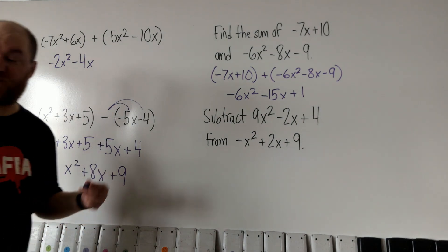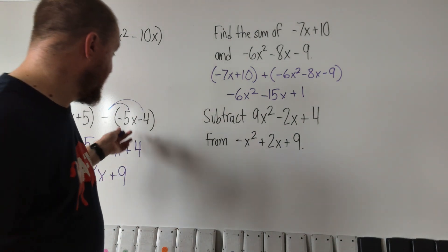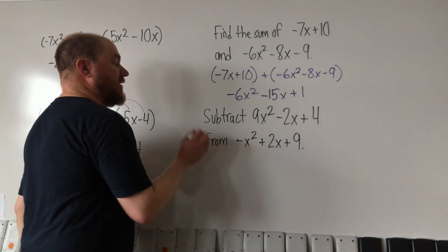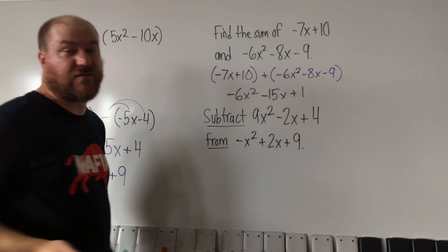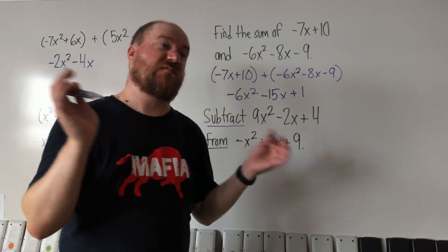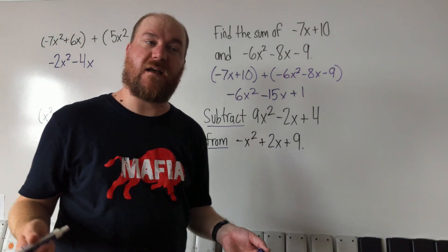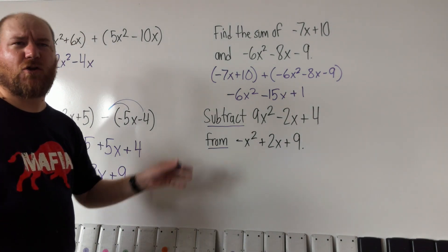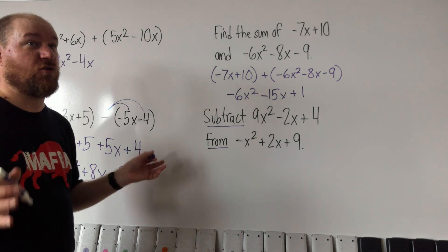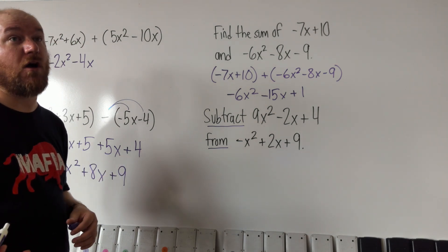All right, and then finally, the last one is the most tricky. It's the same process as over here. But when they say subtract from, this is something that's probably been haunting you your whole math life. Subtract from is like a tricky way of them saying, hey, not only are you subtracting, but you actually are given to them in the wrong order.